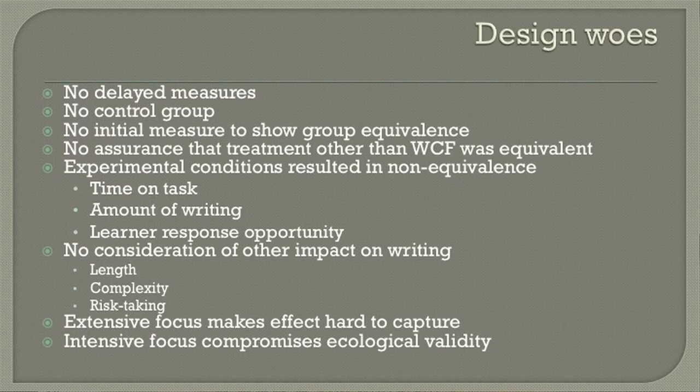Sometimes the experimental conditions can introduce problems of their own. For instance, if in one group you ask students to look at the feedback and rewrite their essays, you may have introduced a confounding variable — they just spend more time doing it, or do more writing. And written corrective feedback actually has two parts: there's the feedback you provide, and then there's what they do with it. It may be that what they do in response to your feedback is as important as what you do. You could even separate them: just read it, or read it and now do something about it.